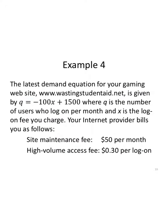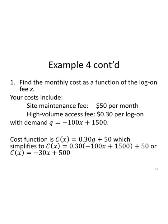The latest demand equation for your gaming website, www.wastingstudentaid.net, is given by Q equals negative 100x plus 1500, where Q is the number of users who log on per month, and X is the log on fee you charge. Your internet provider bills you as follows. You have a site maintenance fee of $50 per month, and you have a high volume access fee of $0.30 per logon. So this is all gonna go into some kind of costs. Let's see what's going on.